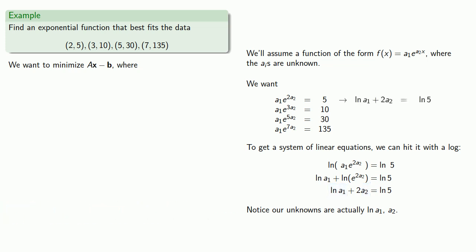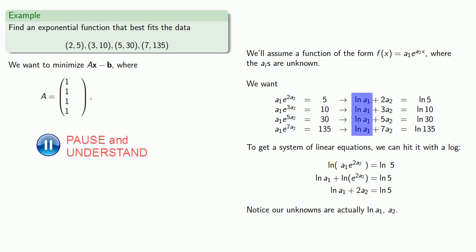And similarly, I can rewrite all of the other equations by hitting them with a log. And so I get my coefficient matrix. Remember, log of A1 is our variable, so the coefficients in this column are all ones. The coefficients in the other columns are the coefficients of A2. Our column vector of variables are log of A1 and A2. Our column of constants are the log values.